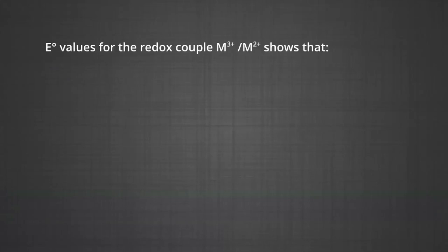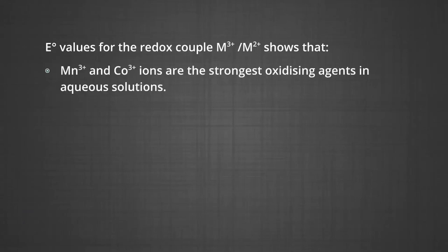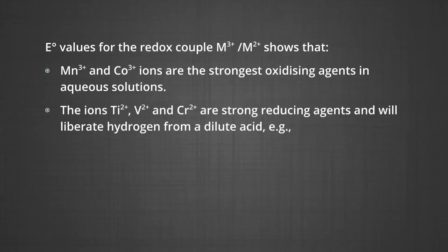An examination of E° values for the redox couple M3+/M2+ shows that Mn3+ and Co3+ ions are the strongest oxidizing agents in aqueous solutions. The ions Ti2+, V2+, and Cr2+ are strong reducing agents and will liberate hydrogen from a dilute acid.